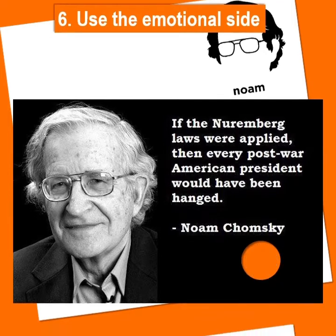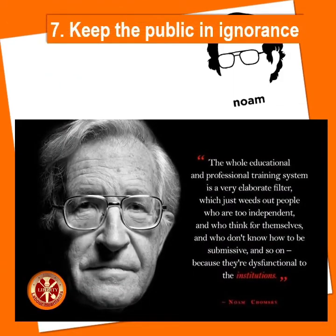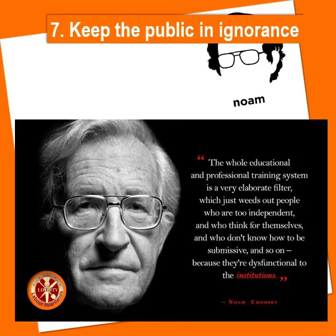7. Keep the Public in Ignorance and Mediocrity. Making the public incapable of understanding the technologies and methods used to control and enslave them. By the quality of education given to the lower social classes — this must be as poor and mediocre as possible — so that the gap of ignorance between lower and upper classes is and remains impossible to overcome for the lower classes.